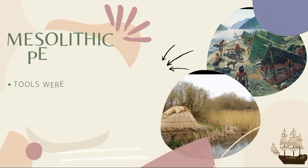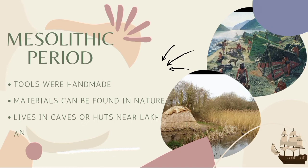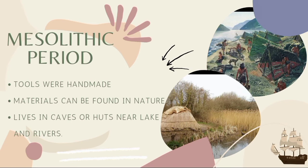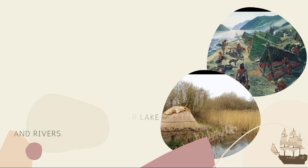The second subcategory of the Stone Age is the Mesolithic period. This is where tools were handmade and materials could also be found in nature. They learned how to use bows and arrows, as well as boats for fishing. They had the same habitation as the Paleolithic period, usually living in caves or huts near lakes and rivers. Their society expanded from a small band to a tribe consisting of more than 100 people, compared to the Paleolithic where society was composed of only 25 to 100 people.